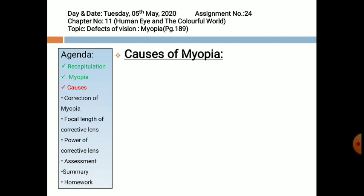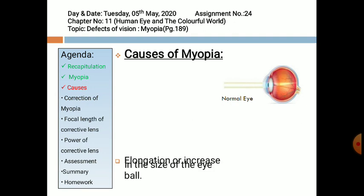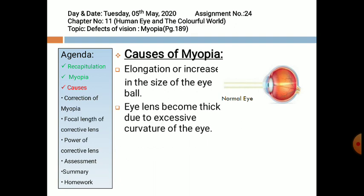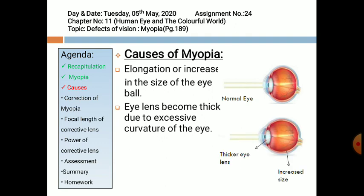What causes myopia? First of all, look at this figure of a normal eye — the incident rays passing through the eye lens are meeting on the retina. The first cause is elongation or increase in the size of the eyeball. If the eyeball becomes big, then the focus shifts from the retina to in front of the retina. The second cause is when the eye lens becomes thick due to excessive curvature of the eye. Here is the figure where you can compare both eyes: normal eye and a myopic eye. The size of the eyeball is increased and the eye lens becomes thicker. So these are the two causes of myopia.